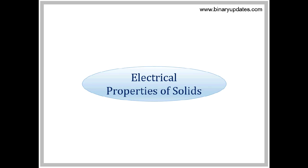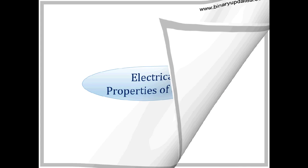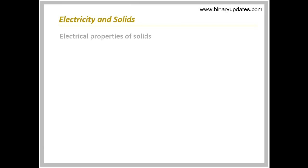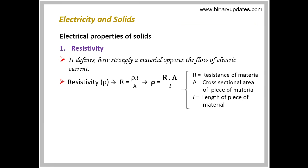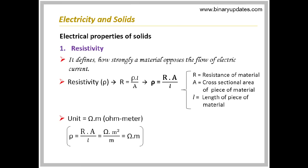Electrical properties of solids. The first property is resistivity, which defines how strongly a material opposes the flow of electric current. It is denoted with the letter rho. Mathematically, resistivity is defined as R multiplied by A divided by L, where R is resistance of material, A is cross-sectional area, and L is length of the piece of material. The unit of resistivity is ohm meter.